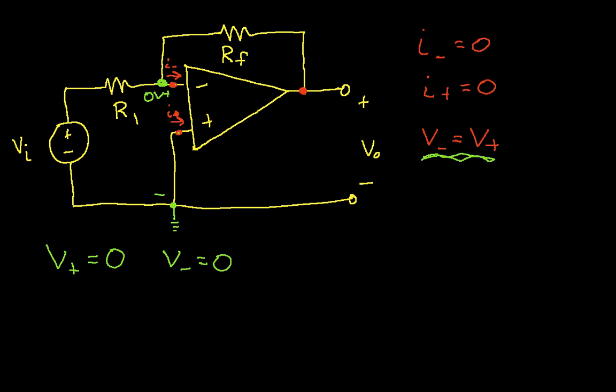So that allows us to fairly easily compute the currents that flow through R1 and RF. If I call this I1, the current that flows through R1 will be equal to this input voltage, VI divided by R1. And again the reason for that is the voltage at this point is 0 volts, so the voltage across R1 is just the same as VI. So that gives us I1.